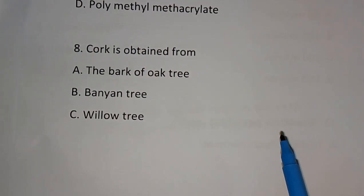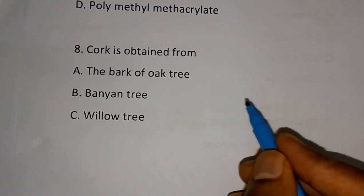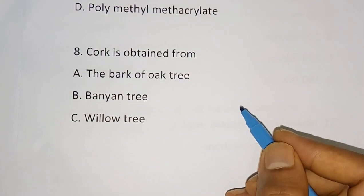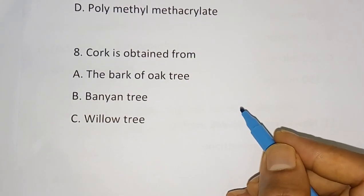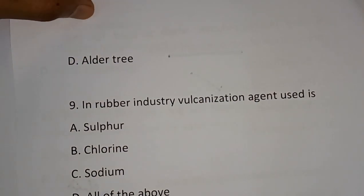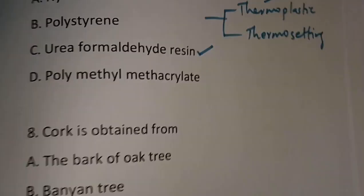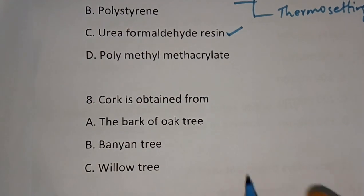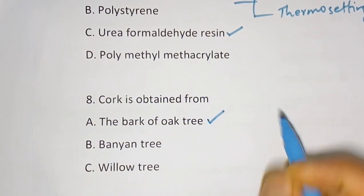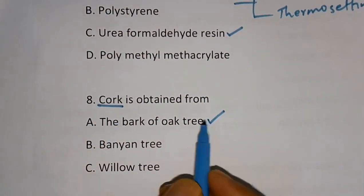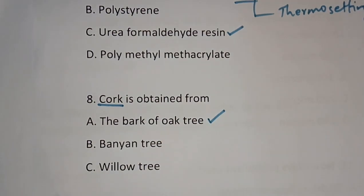Question 8: Cork is obtained from — options are the bark of oak tree, banyan tree, willow tree, or alder tree. The correct answer is the bark of the oak tree. Cork is obtained from the bark of the oak tree.